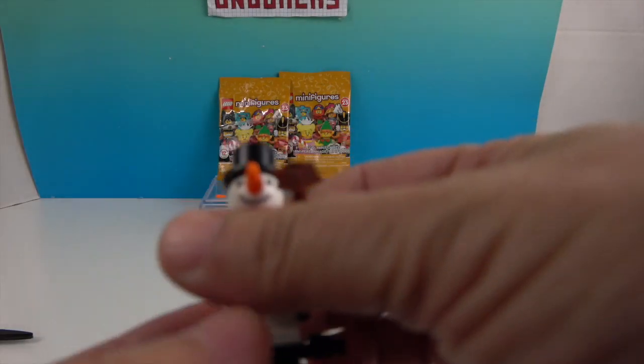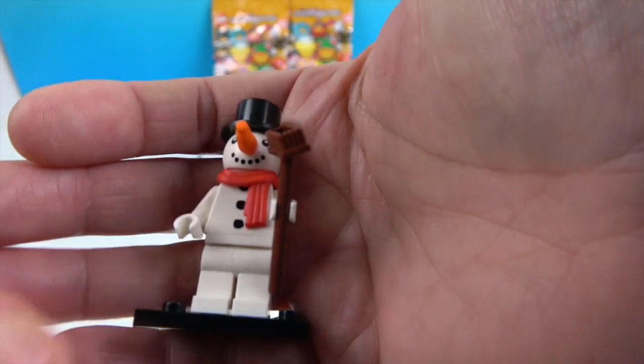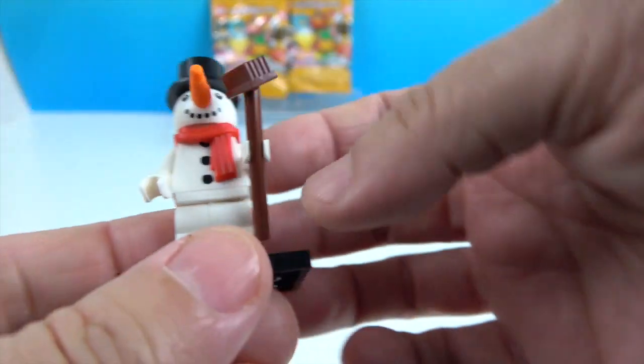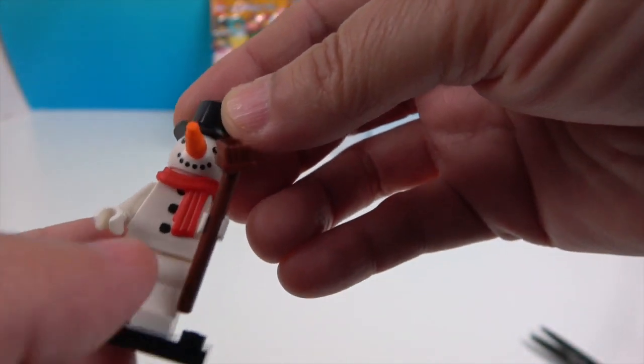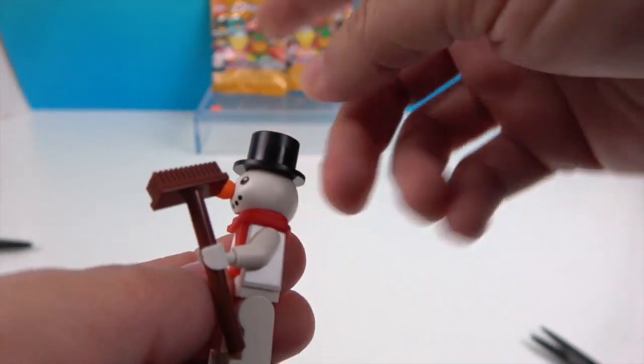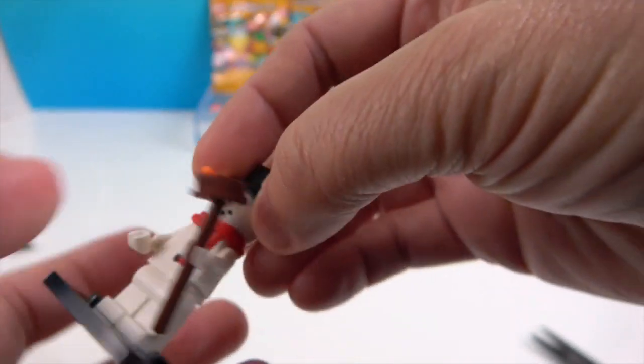They got the snowman! You can get a good look at him - a little broom, a little scarf, the coal buttons. He came with an extra carrot nose, and his little hat comes on and off.